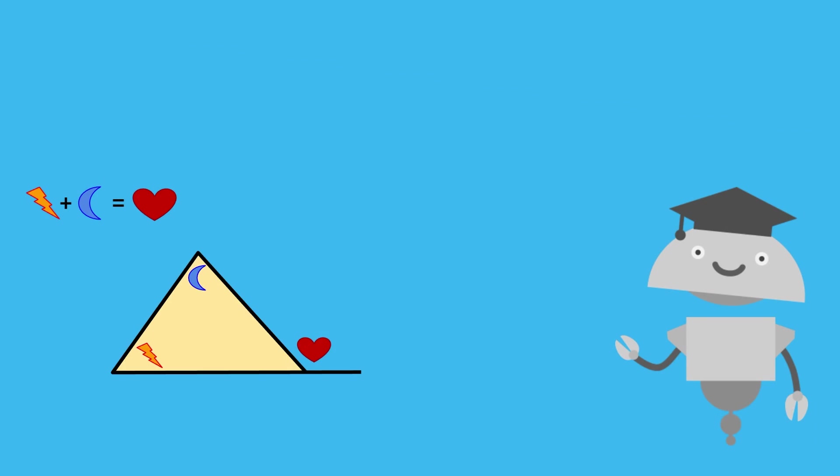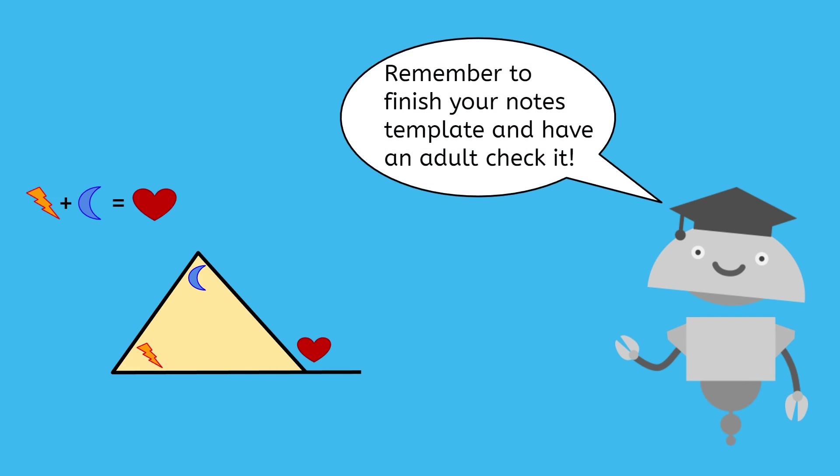Now you can use the Exterior Angle theorem to solve for unknown values. There's a bit more practice for you to try in your notes template before you complete your practice game. Do that next, and have an adult check your work to make sure that you're on the right track. It's been fun, and I will see you next time!